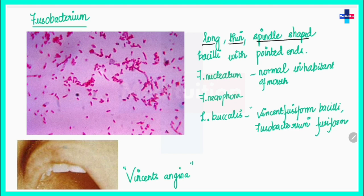The next bacterium is Fusobacterium. Fusobacterium consists of long, thin, spindle-shaped bacilli with pointed ends. Subspecies include Fusobacterium nucleatum, which is a normal inhabitant of the mouth.